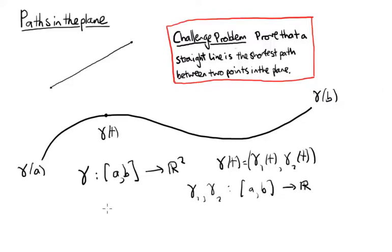So we need to require something of these functions because we don't want our path to jump around in a discontinuous way. So we need them to be continuous functions, which I'll just write CTS. And we actually want a little bit more because we want to be able to draw tangent vectors.